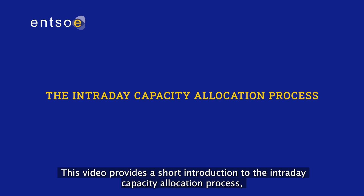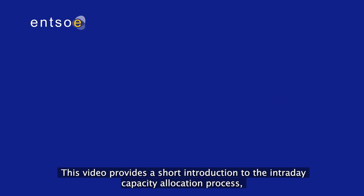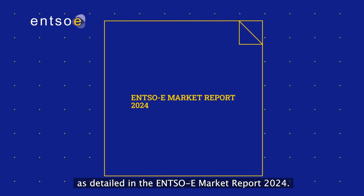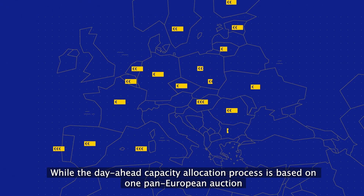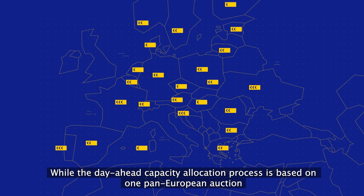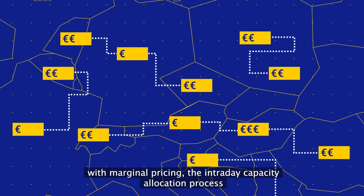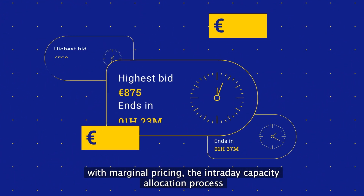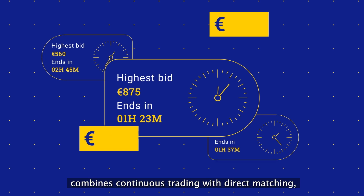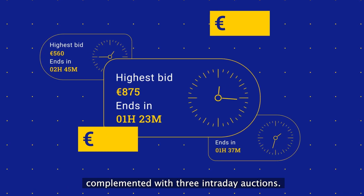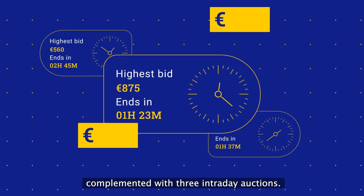This video provides a short introduction to the intraday capacity allocation process, as detailed in the ENSOE Market Report 2024. While the day-ahead capacity allocation process is based on one pan-European auction with marginal pricing, the intraday capacity allocation process combines continuous trading with direct matching, complemented with three intraday auctions.